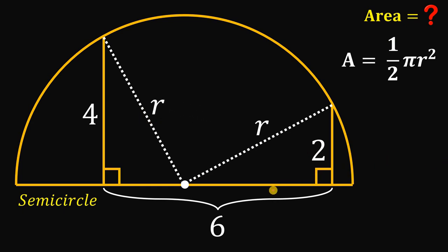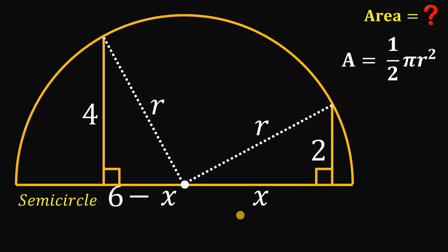From here, what we're going to do is let this segment right over here be equal to x. Since the total measure of the distance of these two perpendicular segments is 6, the measure of this segment right over here must be equal to 6 minus x.